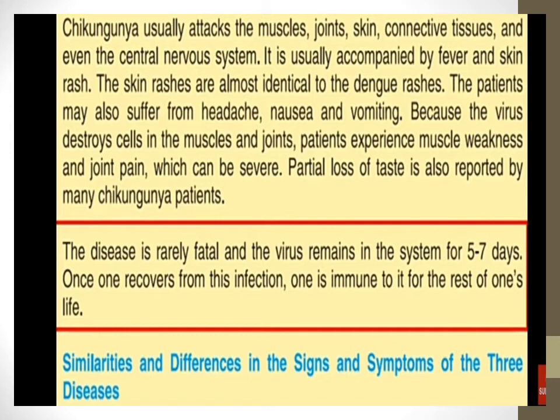Chikungunya usually attacks the muscles, joints, skin, connective tissues, and even the central nervous system. It is usually accompanied by fever and skin rash — similar to dengue, where rashes appear as the fever decreases. The skin rashes are almost identical to dengue rashes. The patient may also suffer from headache, nausea, vomiting, muscle weakness, and severe joint pain.